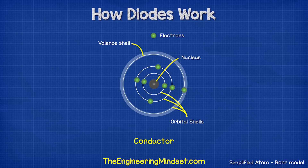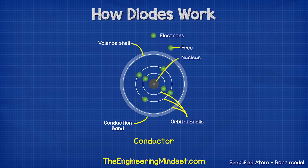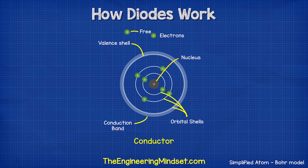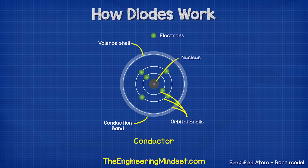The electrons are held in place by the nucleus, but there's another shell known as the conduction band. If an electron can reach this, then it can break free from the atom and move to another. With a metal atom such as copper, the conduction band and the valence shell overlap, so it's very easy for the electron to move.